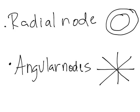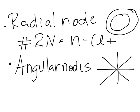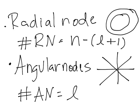Coming back to each of the types of nodes, the number of radial nodes will be n minus l plus one, n being the principal quantum number, and l being the secondary quantum number. And for the number of angular nodes, we'll have l. So those are our two equations for each of the cases.